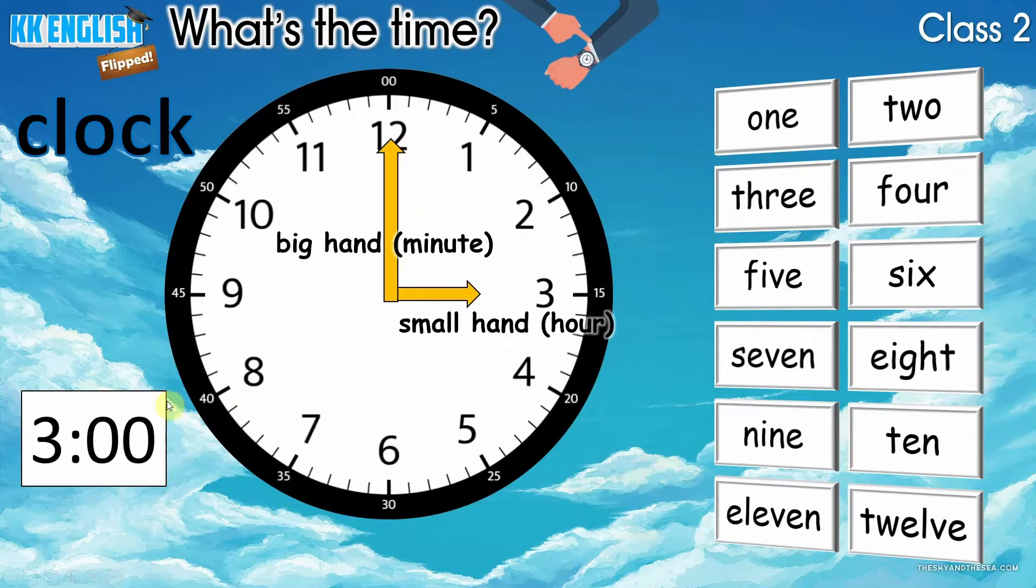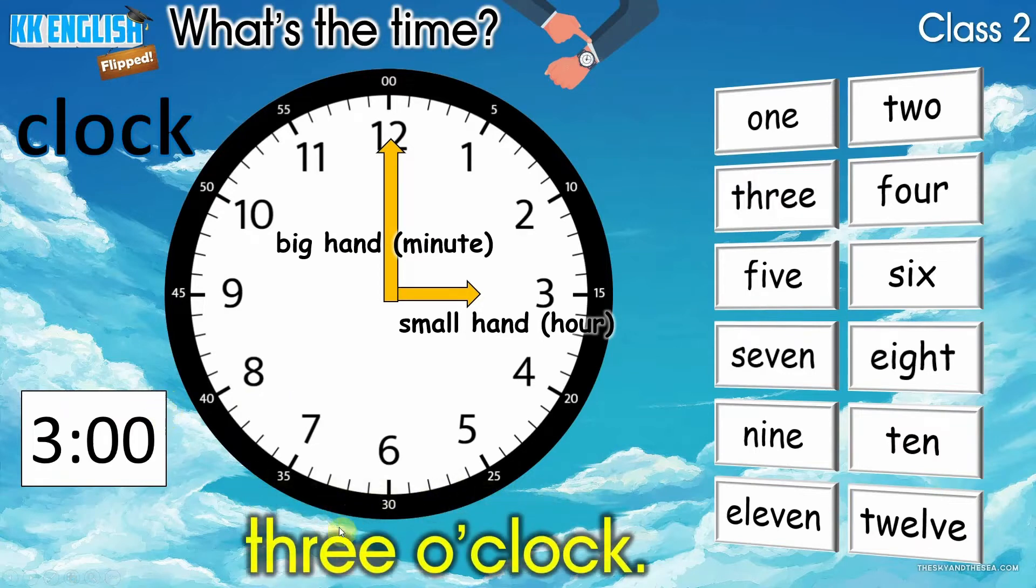On this digital clock, 在左边这个电子时钟我们可以写出数字的时钟叫做三点钟. Now, in English, how do we tell the time? We can say three o'clock. This is three o'clock. When people ask you, 当人们问你呢, what's the time? 现在几点钟? You answer like this. It's three o'clock. 现在是三点钟.